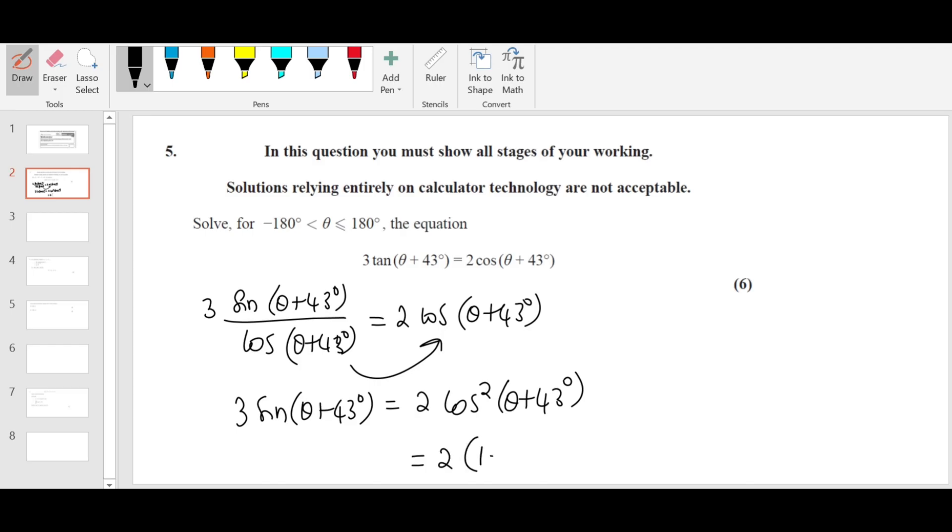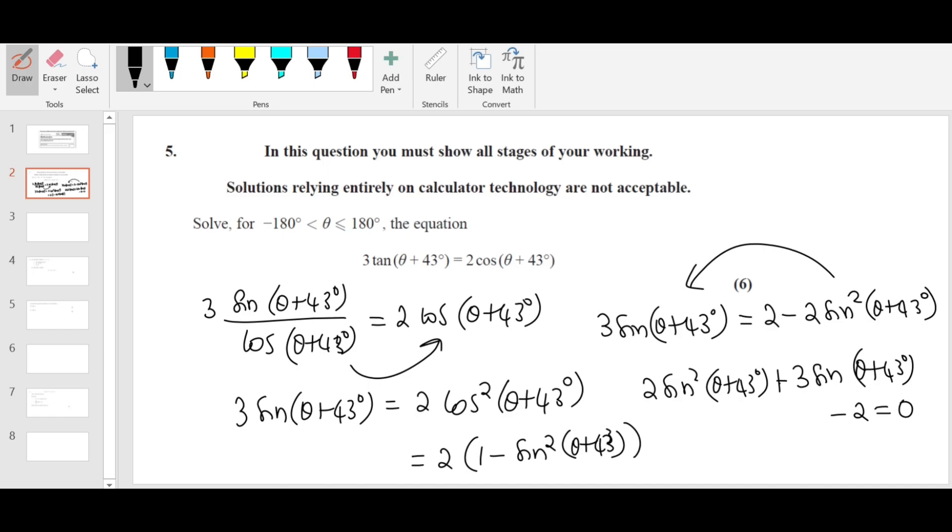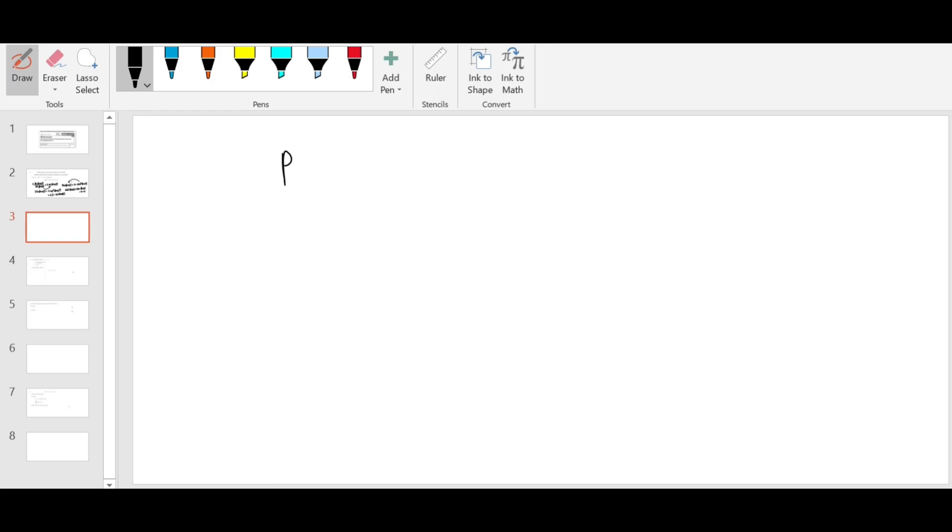Theta plus 43 degrees. Then I'm going to replace cos squared by 1 minus sine squared theta plus 43. Open the bracket. You will get 3 sine theta plus 43 degrees equals 2 minus 2 sine squared theta plus 43 degrees. Put everything on one side. You will get 2 sine squared theta plus 43 plus 3 sine theta plus 43 minus 2 equals 0, which is a quadratic equation. So I'm going to take P as sine theta plus 43 degrees.